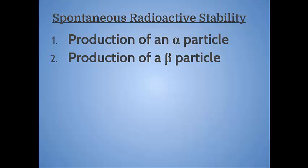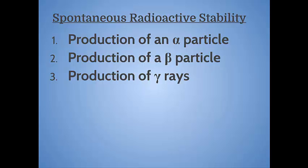So we're going to take a look at a few different types: production of an alpha particle, production of a beta particle, production of gamma rays, and then something called spontaneous fission. And we'll take a look at fusion at the very end.